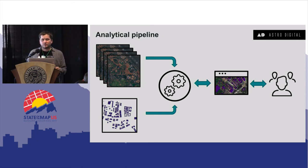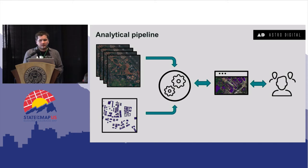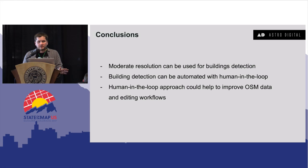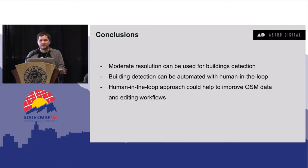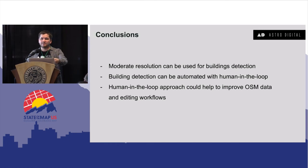The upside is that we were able to make the whole cycle of interaction with the user in under a minute, meaning the process still feels interactive. In conclusion, moderate resolution imagery can be used for building detection and finding areas with change. Building detection can be automated with human in the loop — specifically through active learning — where validation data is passed back to the model, not just to the user. This approach can significantly help improve OSM data and editing workflows.